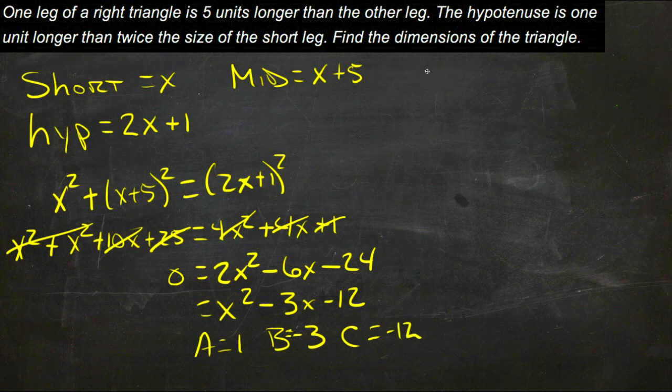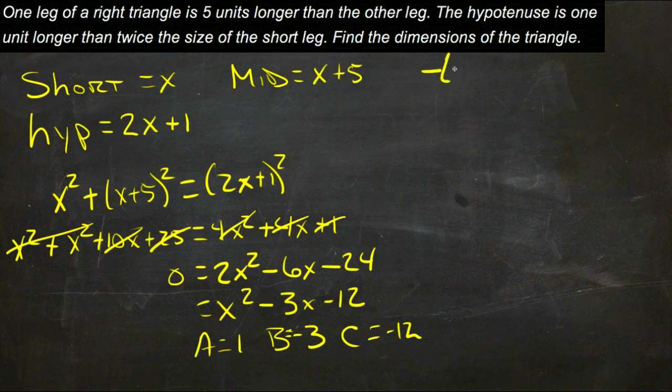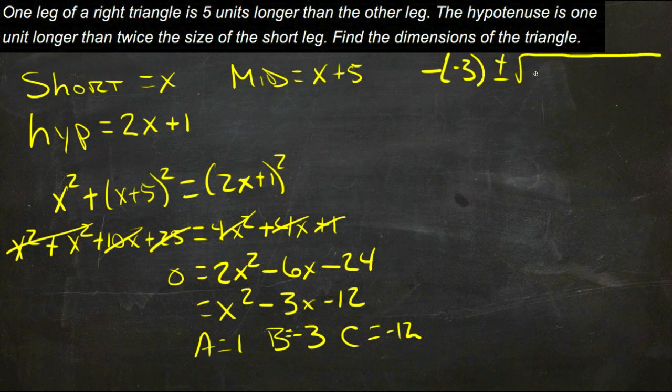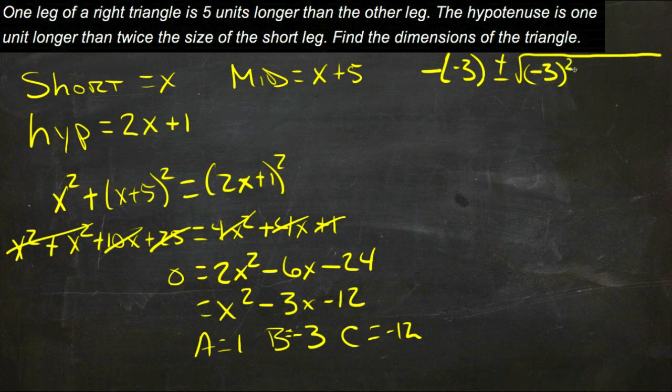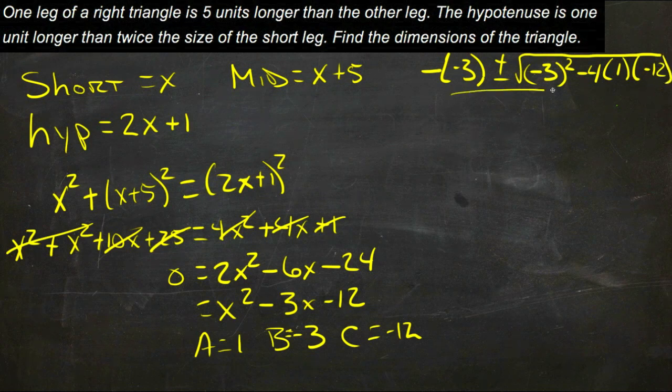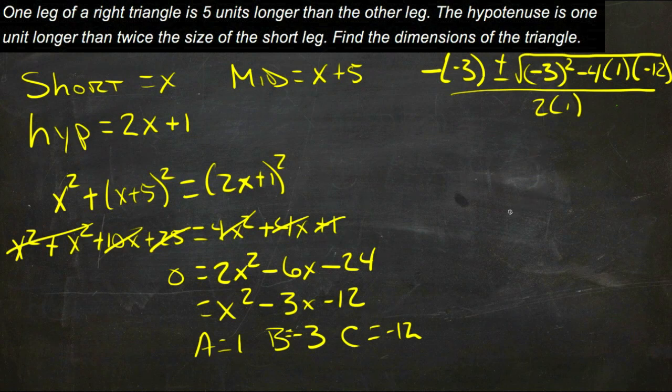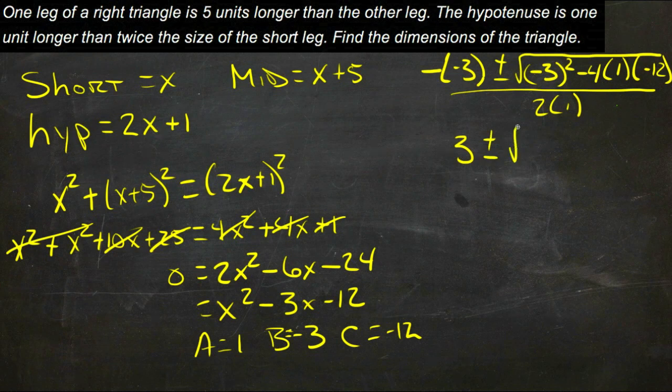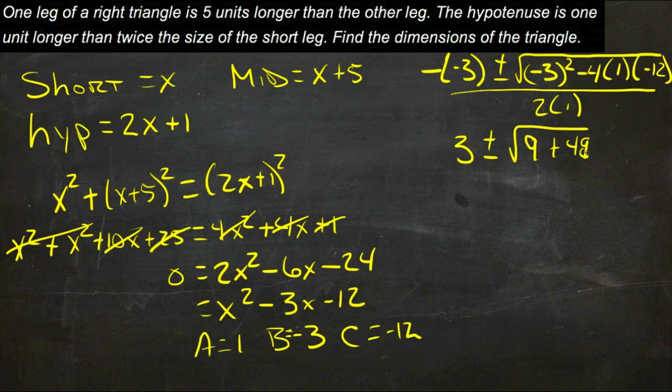So we have negative negative 3, negative b, plus or minus the square root of b squared minus 4ac all over 2a. And now we simplify, and we'll get positive 3 plus or minus the square root of 9 plus 48 over 2.